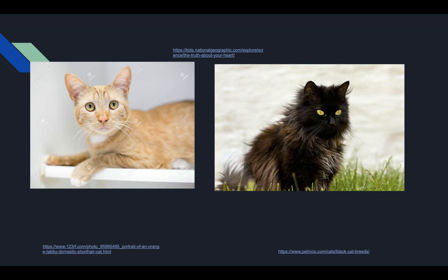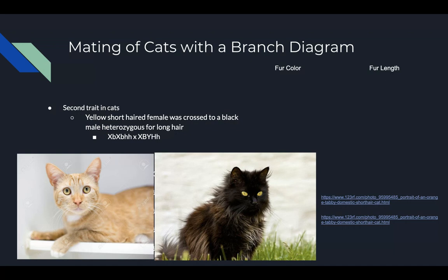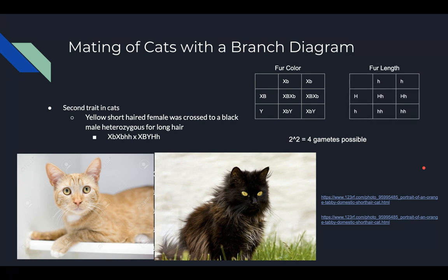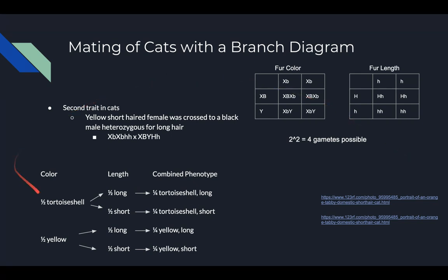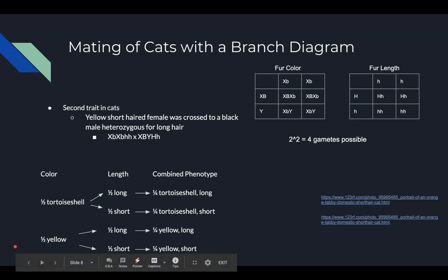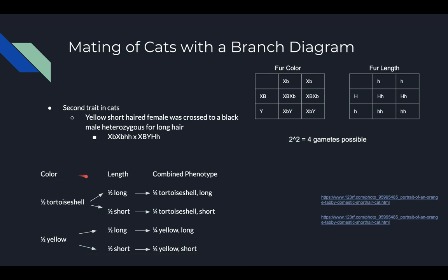Now let's do another example comparing two different traits. We have a yellow short-haired female and a black long-haired male. We know that there are two traits being passed and crossed: fur color and fur length. We do two squared to result in four possible gametes. We would do a Punnett square for fur color and one for fur length. From there we can create a branch diagram in order to easily see the possible offspring. We know that half of the offspring will be tortoiseshell and the other half yellow for fur color, and that half will be long-haired and the other half short-haired. From there we would multiply each fraction in the branch together to determine the possible genotypes of the offspring.